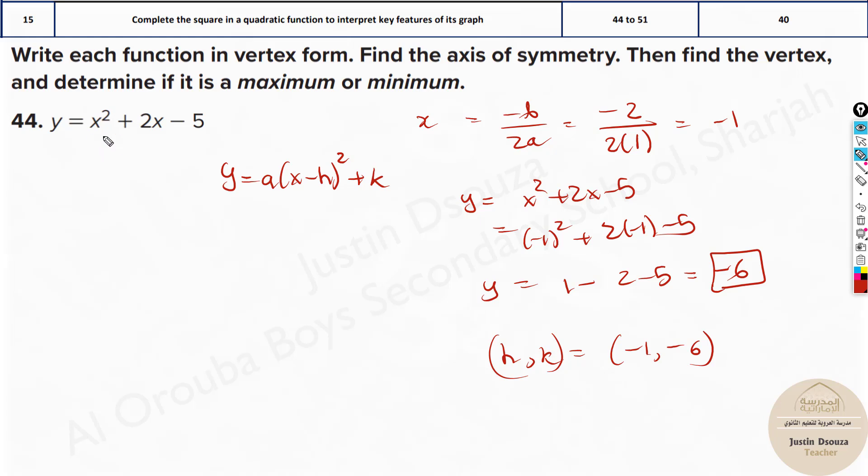Now instead of doing the completing the square method, you can directly find the vertex if needed. Now I'll tell you how to find the standard form directly from this equation because you have the options over here. But before that, there is maximum and minimum, right?